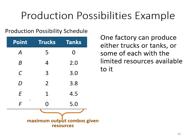Here the possibilities are listed as six combinations. In point A, the country produces five trucks but cannot produce any tanks. In order to increase the amount of tanks — say, increase to two — they have to sacrifice the number of trucks they can produce. Before they could produce five; now they can only produce four. If they keep increasing the amount of tanks they want to produce, eventually they produce five tanks, at which point they cannot produce any more trucks.